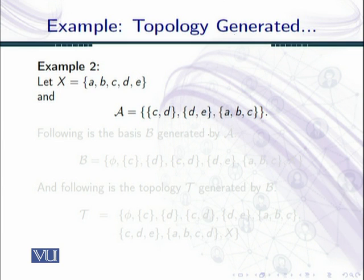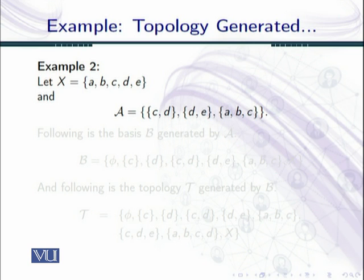Now let us see our next example — example number two. We have another set X = {a, b, c, d, e} and we have the class A = { {c,d}, {d,e}, {a,b,c} }. In both examples, classes have been chosen that violate the basis conditions, because using a class that satisfies both basis conditions would make this a trivial example.